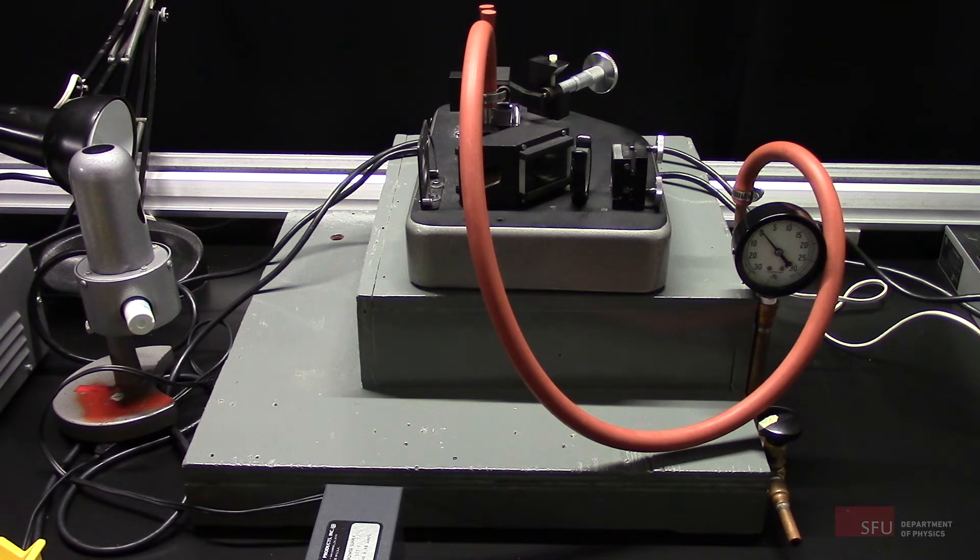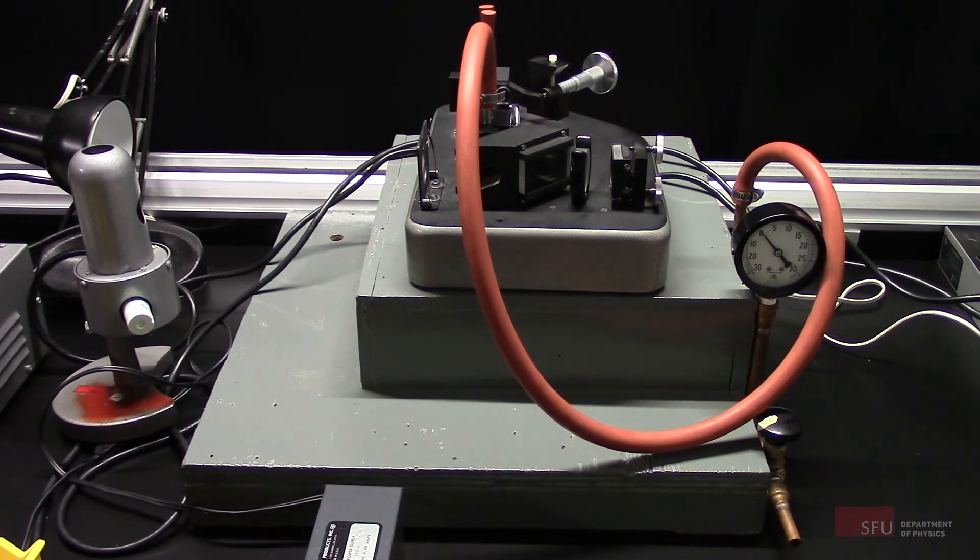The hose is connected to a pressure gauge measuring in inches of mercury. The hose from the pump then connects to the other end.